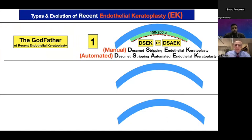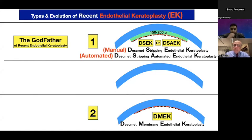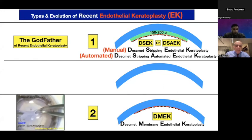After DSEK gained popularity and made a revolution in endothelial management, DMEK was introduced. DMEK stands for Descemet Membrane Endothelial Keratoplasty — it replaces only the diseased endothelial cells with another layer of Descemet and endothelial cells, with no stroma at all. The stripping can be done manually from the donor stroma by two different means, which I'll describe in a few minutes.